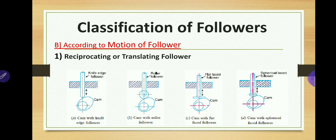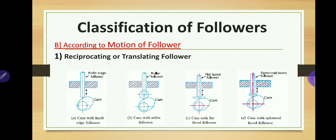The second classification is according to the motion of the follower, which gives two types. The first is the reciprocating or translating follower: when the follower reciprocates in the guides as the cam rotates uniformly, it is known as a reciprocating or translating follower. The follower moves up and down in a linear motion exactly parallel to or coinciding with the axis of the shaft, reciprocating continuously in the guide.